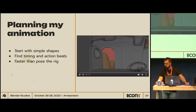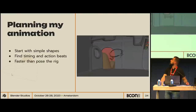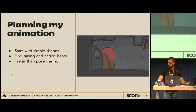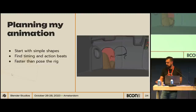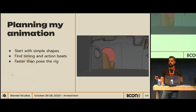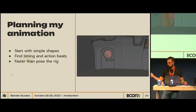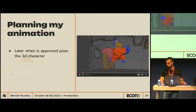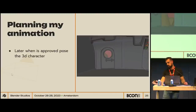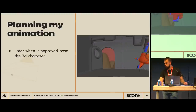When planning my animation, I usually start with a simple shape — it doesn't take too much time. In this case it's just a ball with two legs. It's good for finding the timing and action beats, it's really cheap to do, and you can try different approaches. What you want is fast interaction with the director. This is way faster than posing the actual rig. You just draw some stuff, and when it's approved, you pose your character following the same animation you already did with your grease pencil. It saves a lot of time.